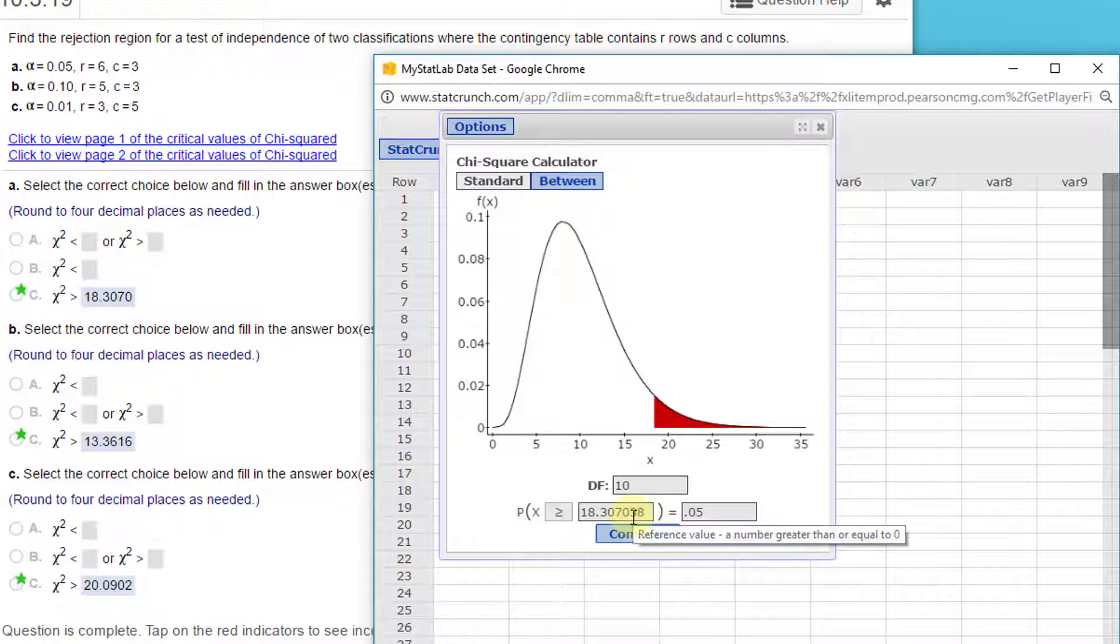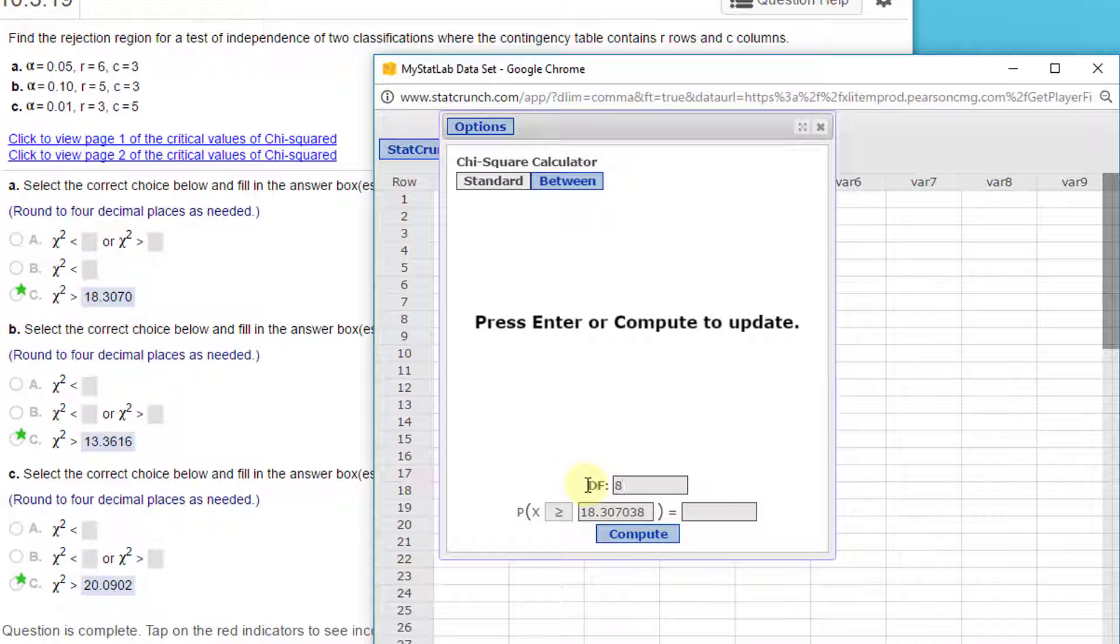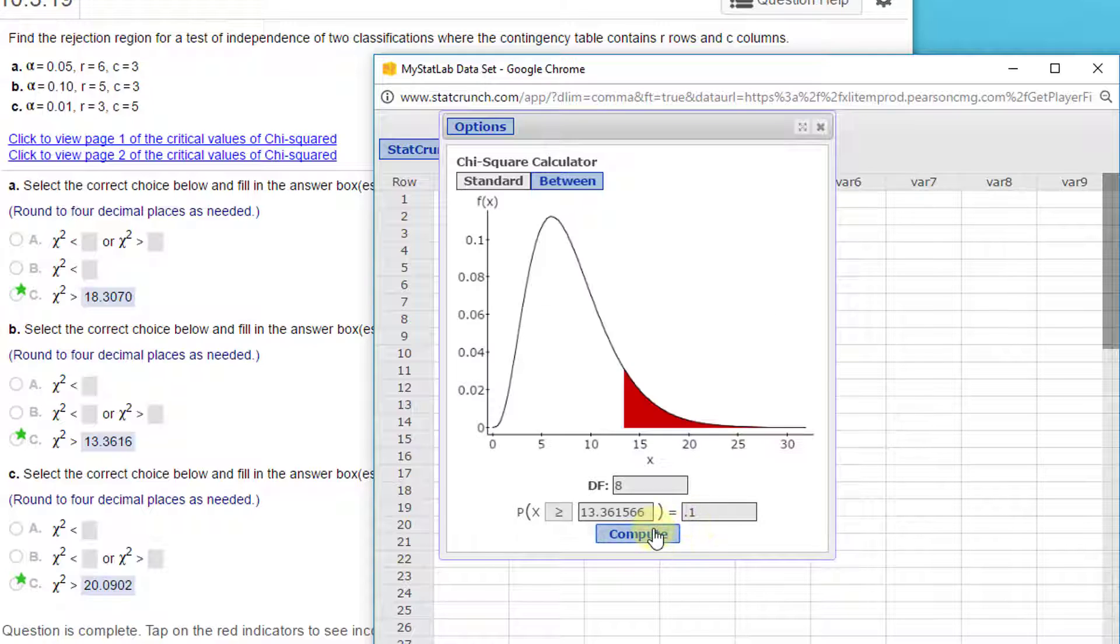The second one, we've got rows of 5, columns of 3. So 5 minus 1 is 4, 3 minus 1 is 2, 4 times 2 is 8. I'll put in 8, and I've got an alpha of 0.1. Compute, and that gives me a critical value of Chi-Square of 13.3616.